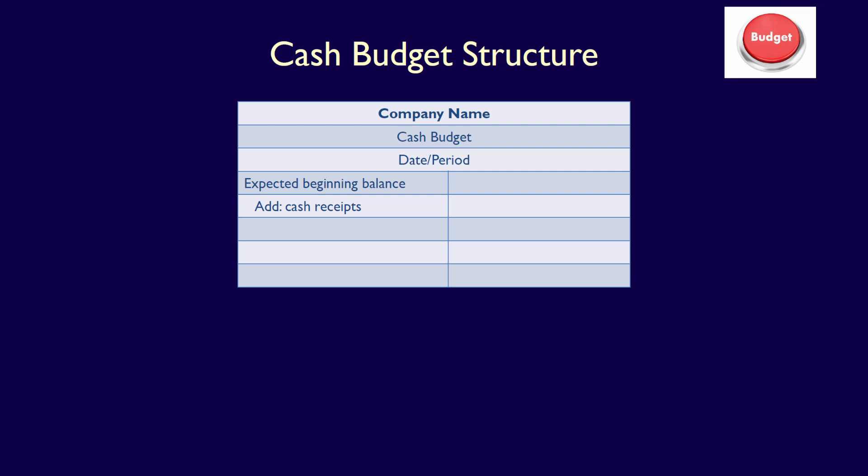The expected beginning balance plus the cash receipts is equal to the cash available during the period. We then deduct the cash payments — the cash outflows the organization expects to make during the period. Cash available less cash payments equals the expected ending balance at the end of the period. Note that this is the most basic structure for a cash budget; cash budgets can become much more complex, but we're going to start with the basic cash budget.